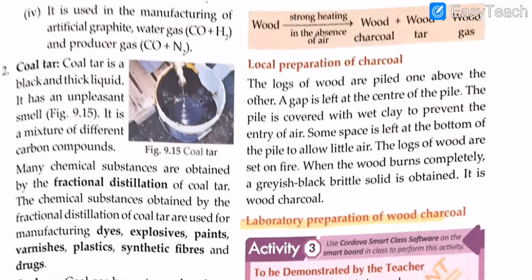The logs of wood are piled up and covered with clay so that air does not come in, but a little space is left. Since air contains oxygen and we need oxygen for burning, the pile is set on fire. The logs of wood are completely changed into a grayish-black brittle solid called wood charcoal.